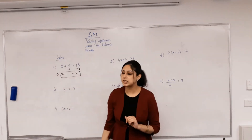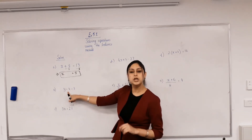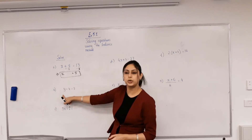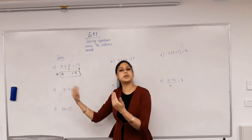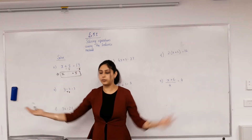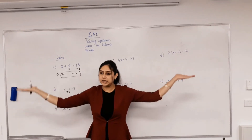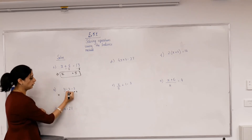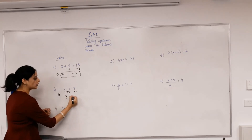Now: y take away 4 equals 3. What has been done to y? Minus 4. You want to undo everything that has been done to get y by itself. 4 has been subtracted from y, so the inverse operation is plus 4. Add 4 to both sides. 4 take away 4 is 0, so you just get y by itself, and 4 plus 3 is 7. Check: 7 take away 4 is 3.